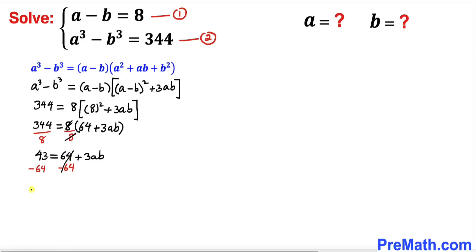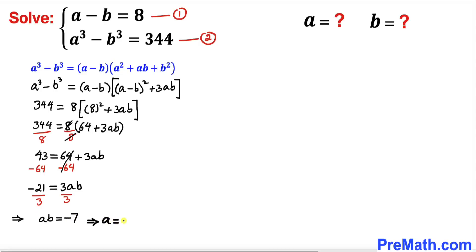Now let's subtract 64 from both sides. We get negative 21 equals 3ab. Dividing both sides by 3, we get a times b equals negative 7, or simply a equals negative 7 divided by b.